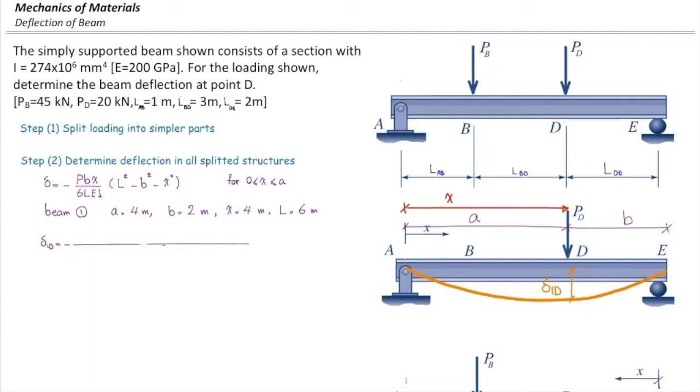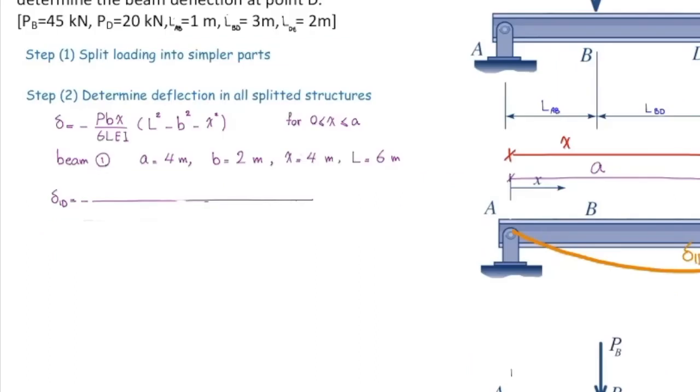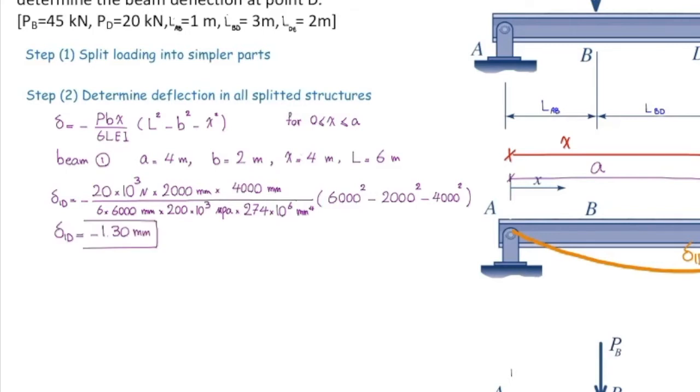I'm going to plug the values into that equation after unit conversion. Force at D is 20 kilonewton. We need to convert that into newton, so multiply that by 1,000. B is 2 meter. Convert that into millimeter. X is 4 meter. And do the same conversion for all the parameters. Plug the values into this equation. And after doing the calculations, we get deformation equal to 1.3 millimeter. This is the magnitude of deformation that occurs in the first beam at point D.